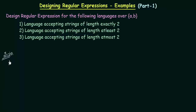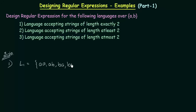Let us first do the first one. Let's say this is language L1, a language that should accept the strings of length exactly 2. If our alphabets are A and B, the strings of length exactly 2 are AA, AB, BA, and BB. These are the only strings that will be accepted in this language L1.